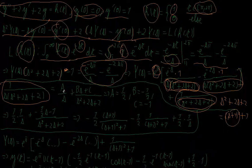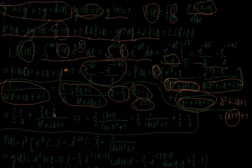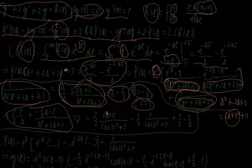For the partial fraction decomposition I write 1/(s(s² + 2s + 2)) = A/s + (Bs + C)/(s² + 2s + 2). This gives A = 1/2, B = −1/2, and C = −1. So the decomposition is (1/2)(1/s) + (−1/2 · s − 1)/(s² + 2s + 2), which I rewrite as (1/2)(1/s) − (1/2)(s+1)/((s+1)² + 1) − (1/2)(1)/((s+1)² + 1).